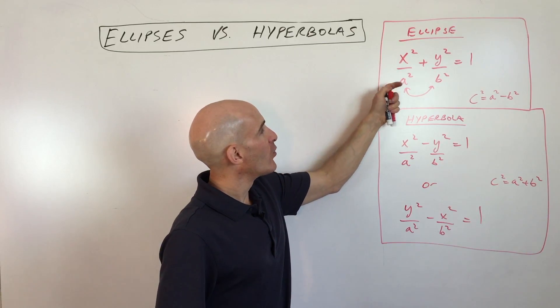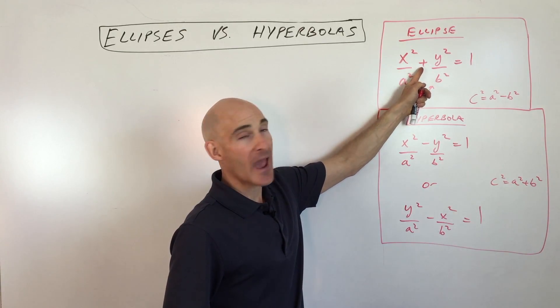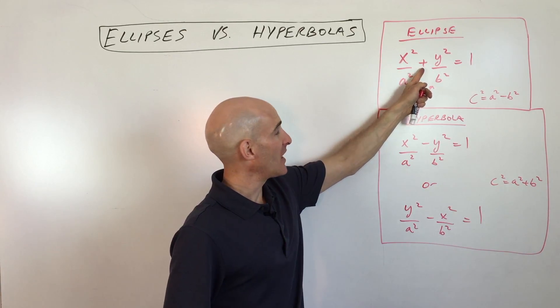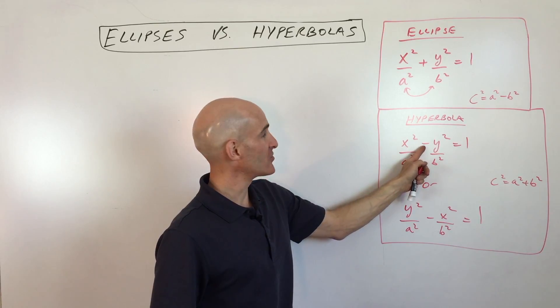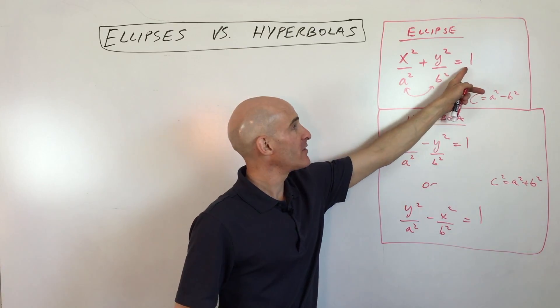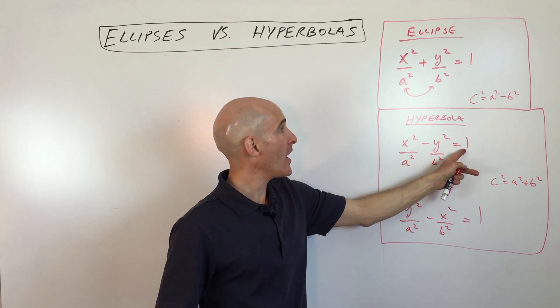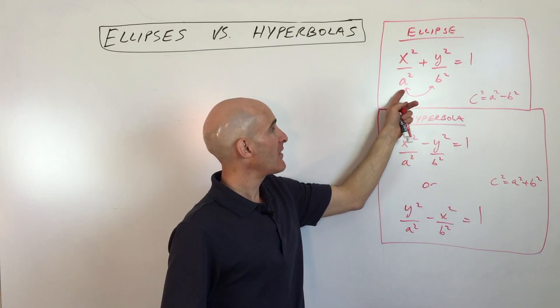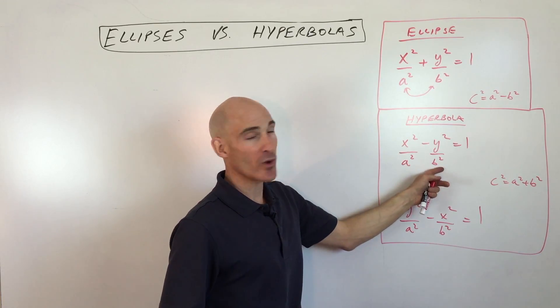With ellipses, you'll notice that you're adding. With hyperbolas, you'll notice that you're subtracting. Both of the equations equal one, and they both have these denominators of a squared and b squared.